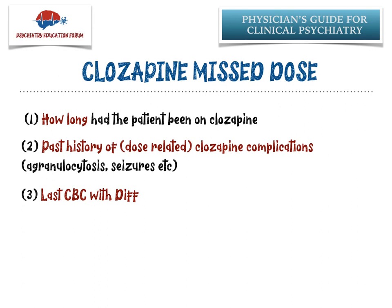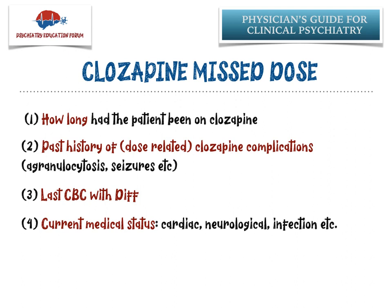Point number three: I will definitely look at their last CBC with differential to see if there was any sudden decline or agranulocytosis noted — if so, faster titration is not recommended. And their current medical status, especially cardiac, neurological from a seizure standpoint, and infection — because somebody with a low white count is at high risk of infection or of infection progressing to a severe level easily in those cases.